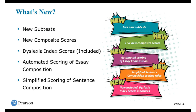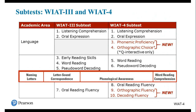So let's look at what is new on WIAT-4. I want to talk first about the subtests that are new, and those subtests will link us to the composite scores that are new. There are five new subtests and five new composite scores. I'm going to talk about the dyslexia index scores now included with the WIAT-4, the automated scoring of the essay composition, and simplified scoring of the sentence composition subtest.